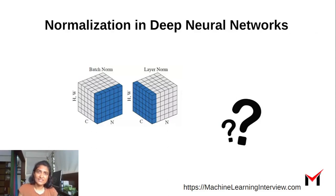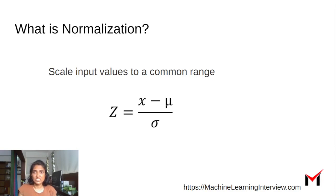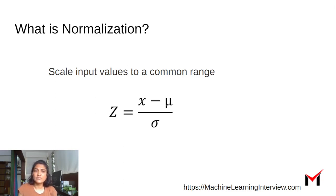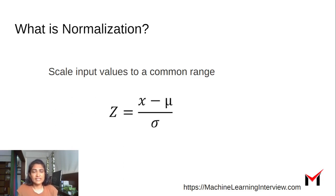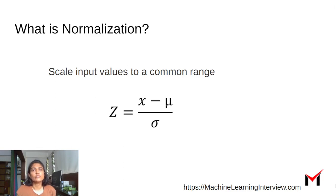Normalization in deep neural networks. Normalization is the process of scaling input values to a common range. In this case, we are subtracting the mean from each value and dividing by the variance. What this does is it zero-centers the values and also keeps the values in a tractable range, where we don't have values that are too high or too low.